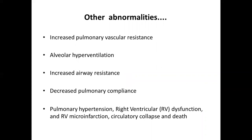The patient typically presents with shortness of breath. The thrombus lodged in the pulmonary artery, along with release of substances like serotonin from platelets, causes increased pulmonary vascular resistance. Due to hypoxia, there will be alveolar hyperventilation and constriction of terminal bronchi, leading to increased airway resistance and decreased pulmonary compliance.